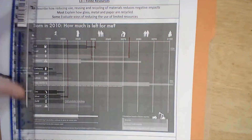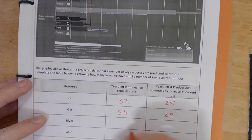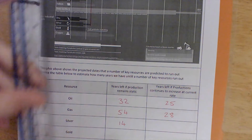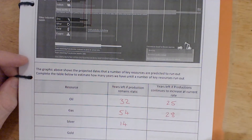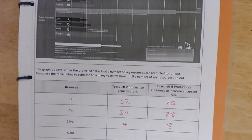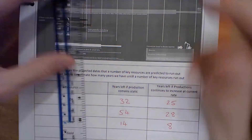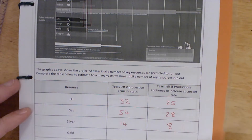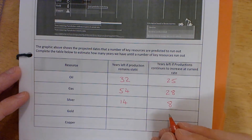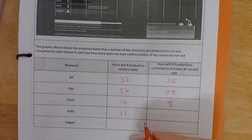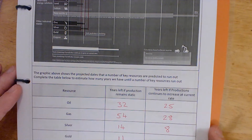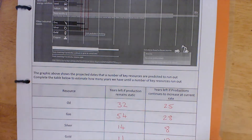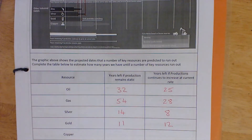Silver: I'll make that 2034, so 14 years left if production remains static. However, if we continue to use it at the current rate, I'll make that about 2028 — so only eight years left before the silver runs out. Gold: I make that 2031, so 11 years if it remains static. Interestingly, we're actually using less gold — the rate is going down — so it'll actually last about 12 years.